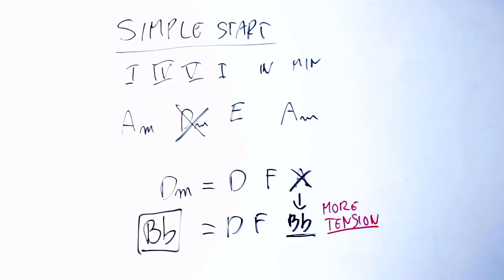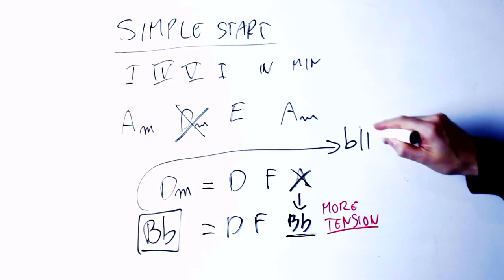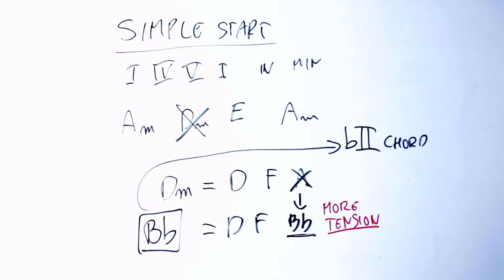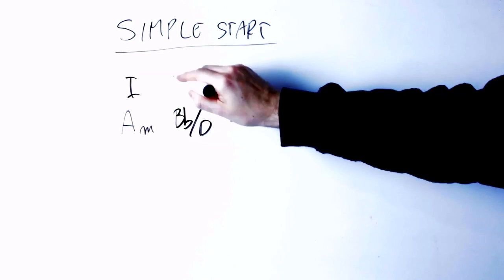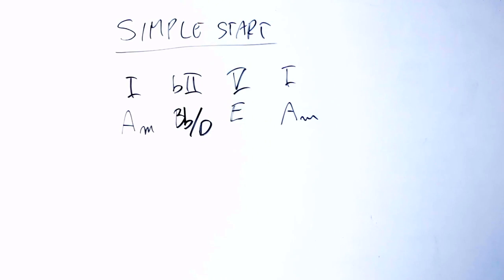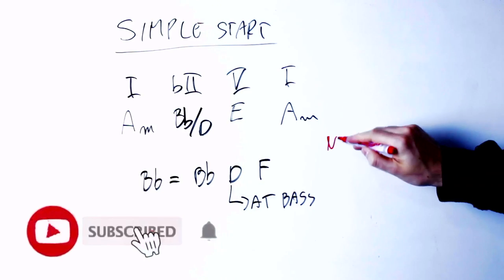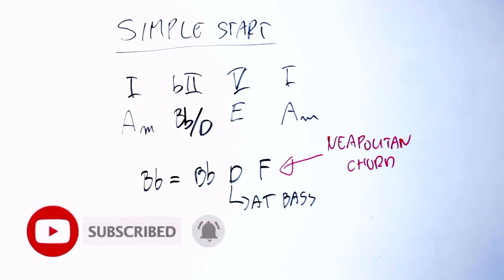That is, this will be the flat second chord or, if you want, the major chord built on the note that is a half step above the tonic of the key. Not only that, but this chord is in a first inversion. That is to say, the third of the chord, which is the D, is at the base. This is the Neapolitan chord.